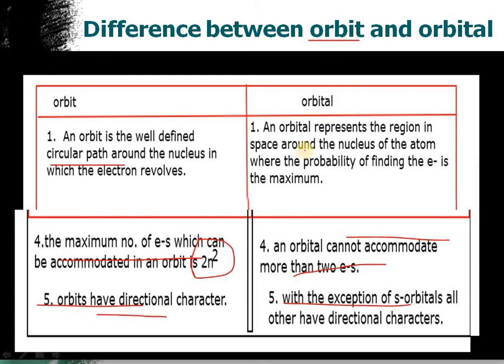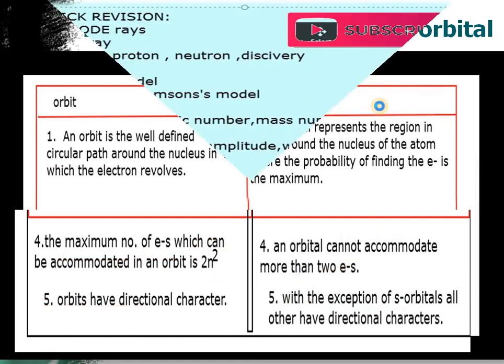If we talk about orbits, they have a directional character. But orbitals, with the exception of s-orbitals, have a directional character. Orbitals are basically what we will study in the next lecture. As you may know, s-orbitals, p-orbitals, d-orbitals, which are called periodic table blocks. These are orbitals. They are three-dimensional and directional except s, because s is spherical. We will do shapes in the next lectures. This is the difference between orbit and orbitals.